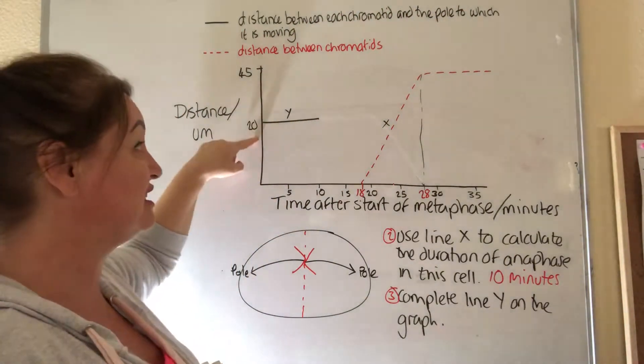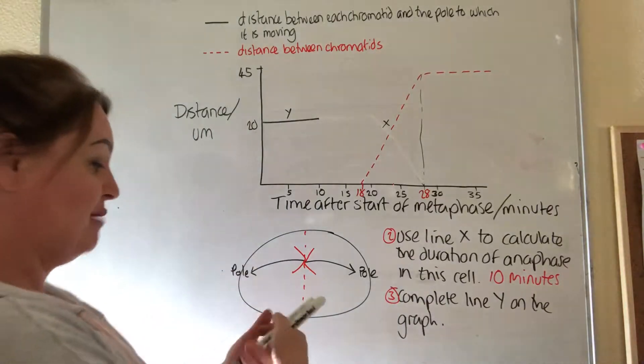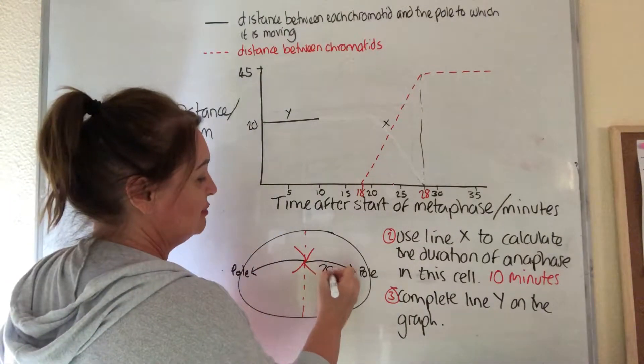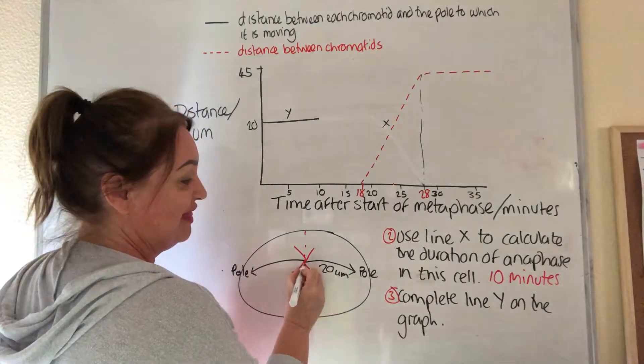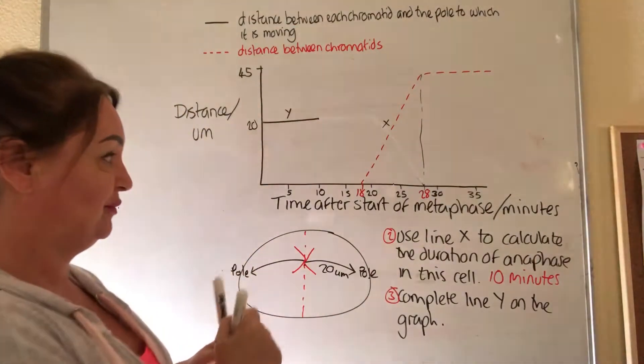Well, at the start of metaphase, it's on 20. That means there's 20 micrometers between there and the pole.